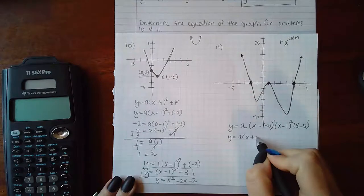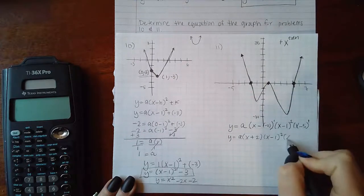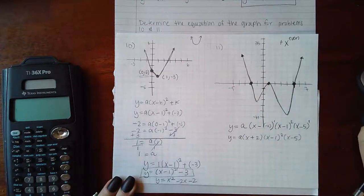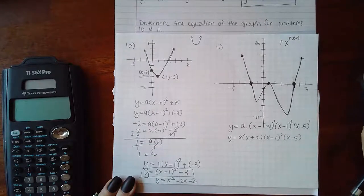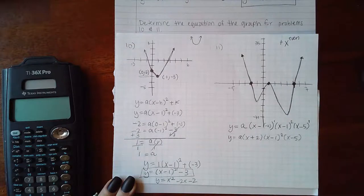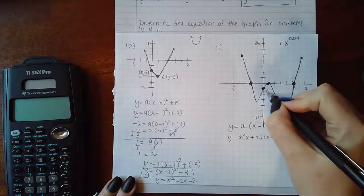If I clean this up, my parabola will be x plus 2, x minus 1 squared, and x minus 5. If I want to have the a value, I need to plug in another point, and I do have a y intercept here.